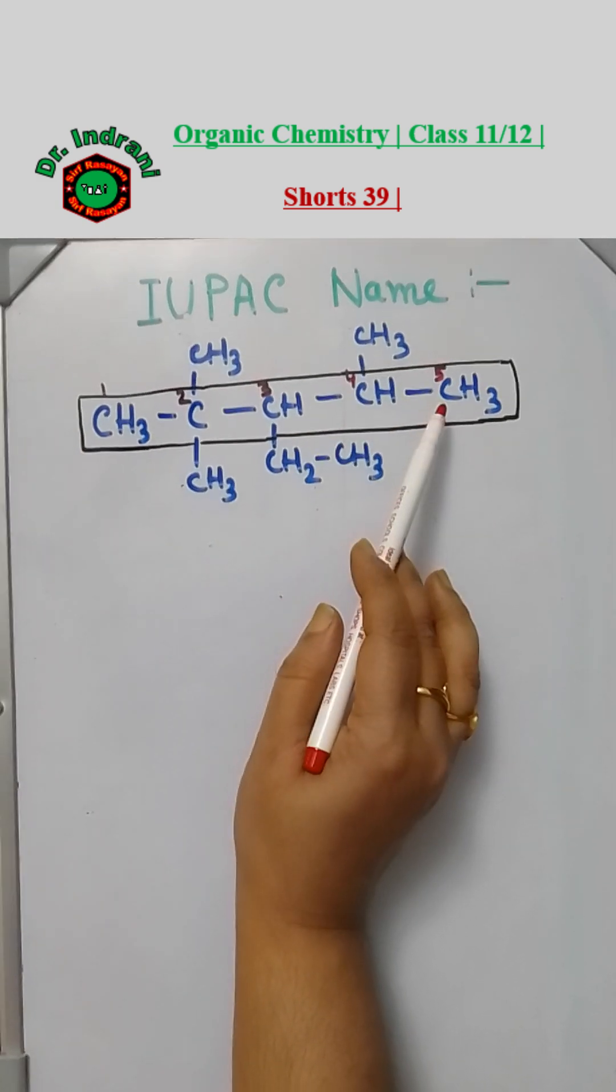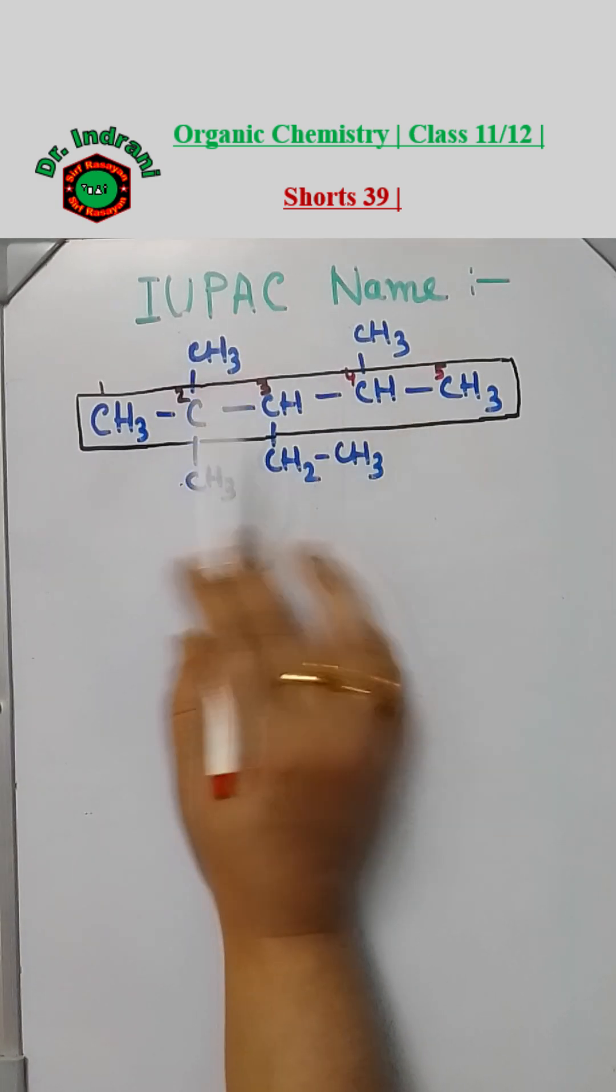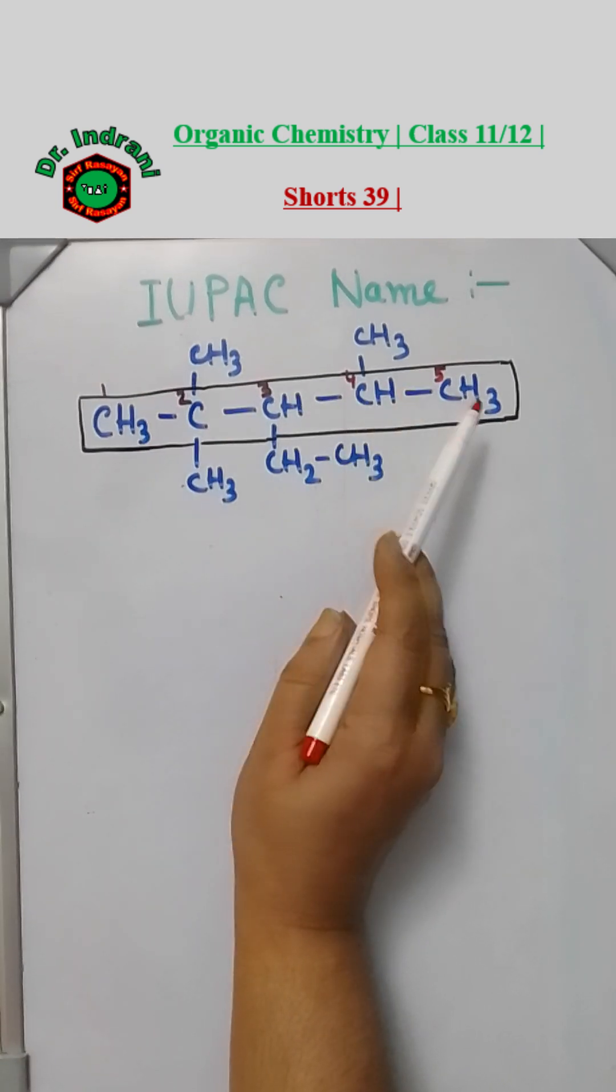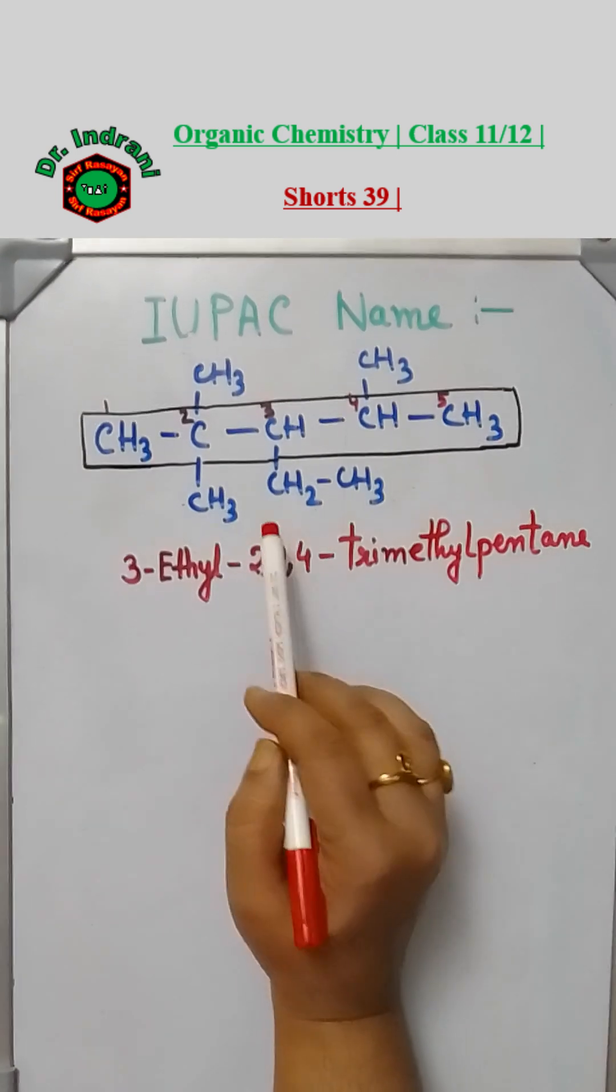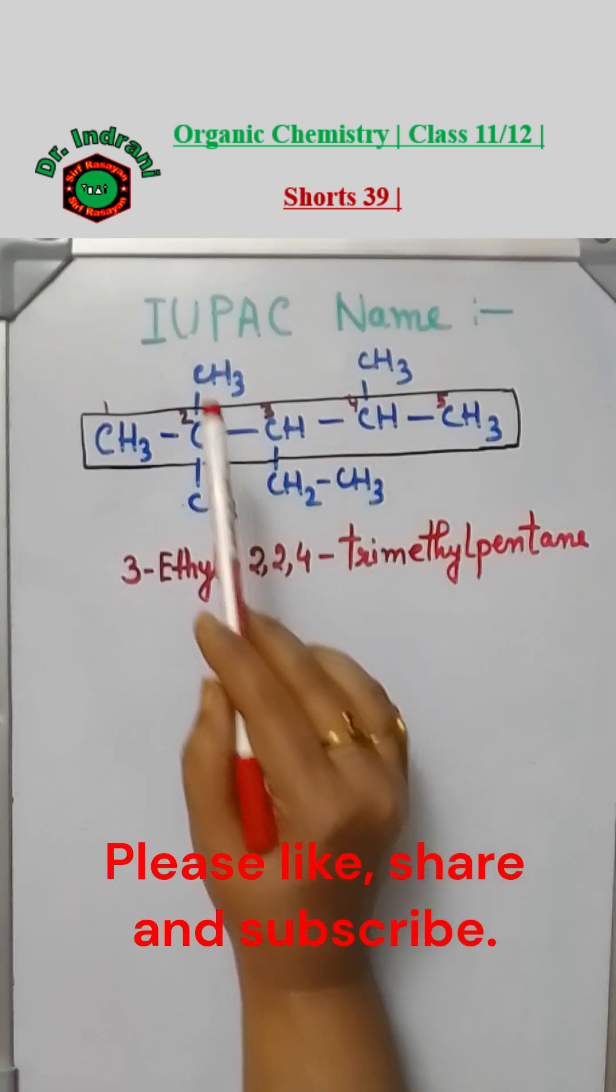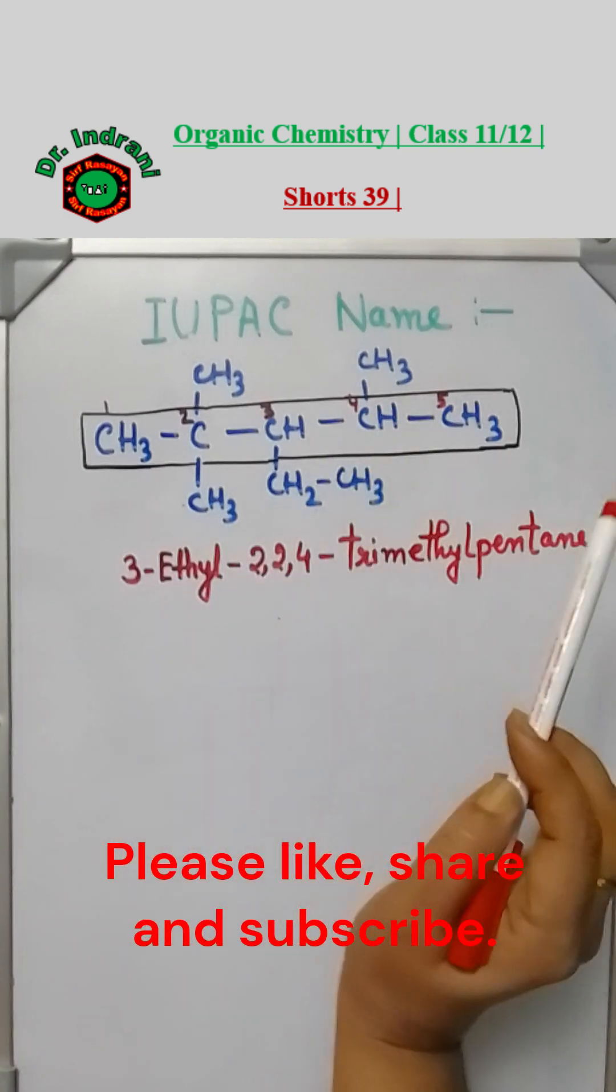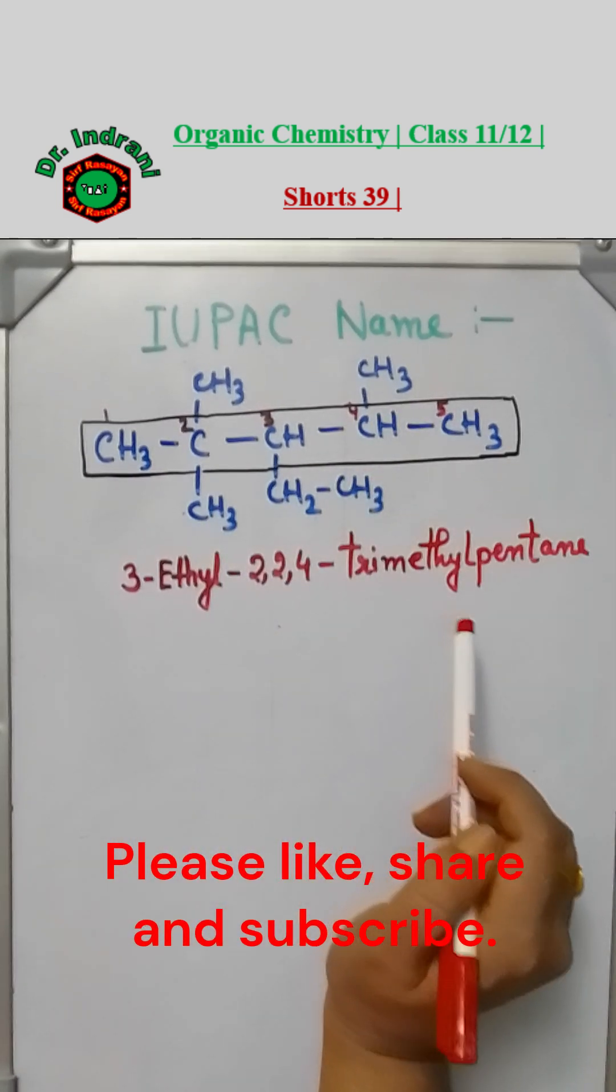Now do numbering of the parent chain following the lowest set of locants rule, like this: one, two, three, four, five. Write the name of the substituents in alphabetic order. So the IUPAC name of the compound is 3-ethyl-2,2,4-trimethylpentane. Thank you for watching.